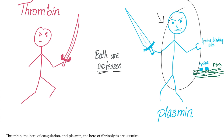How does plasmin know that this protein is fibrin and will destroy only the fibrin, while not destroying proteins in your muscle, for example? The secret is in the receptor — it has a receptor, and that's how it can tell the difference between fibrin and other proteins. When plasmin destroys fibrin, it produces fibrin degradation products or FDPs. However, when it breaks down the stabilized, covalently cross-linked fibrin, it produces D-dimer.